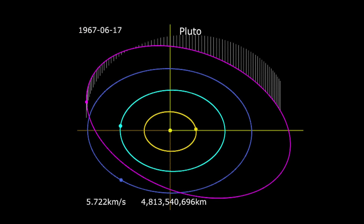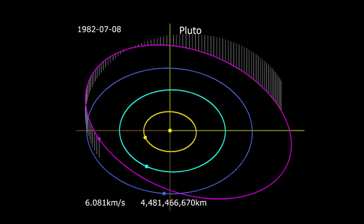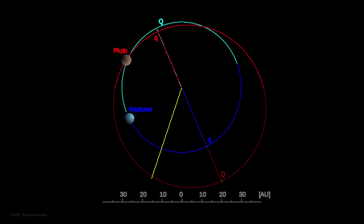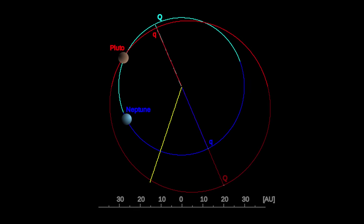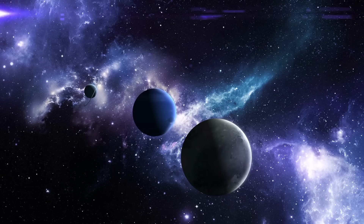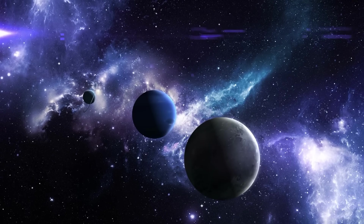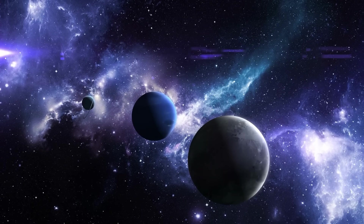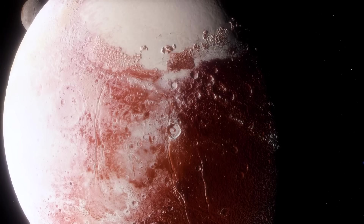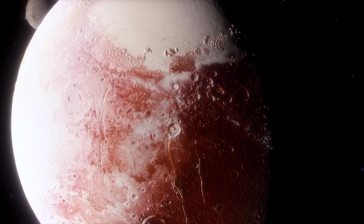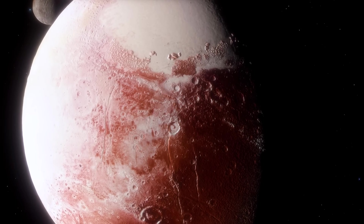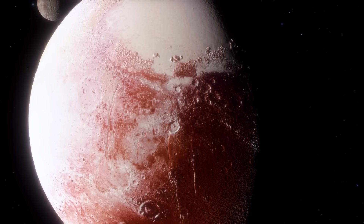The last time this happened was on February 7, 1979, and Pluto remained closer to the Sun than Neptune until February 11, 1999; the previous occurrence was back in the 1700s. With its low mass, Pluto's orbit is quite chaotic through its interactions with Neptune, making it very difficult for astronomers to predict where Pluto will be in the next millions of years, as the uncertainties mount up.